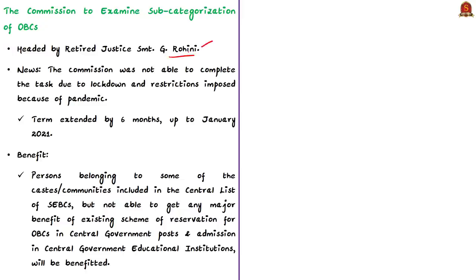This commission was to submit its report this month, but it was not able to complete the task due to the lockdown and the restrictions imposed because of the COVID-19 pandemic. Thus, the term has again been extended by six months up to January 2021. Previously also, the term of this commission was extended many times.